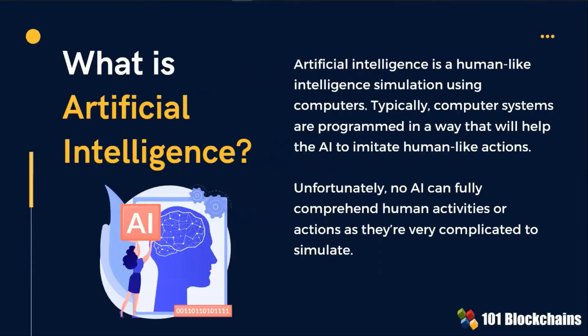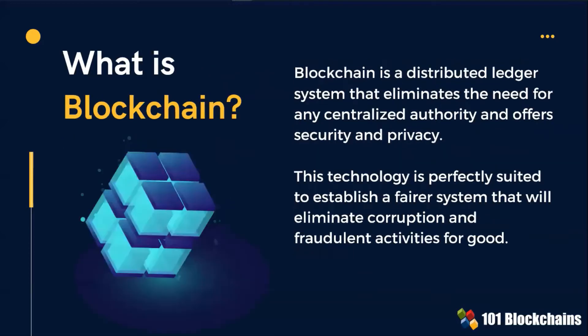With artificial intelligence, or AI, computer systems are programmed to imitate human-like actions. In its basic definition, blockchain is a distributed ledger system that eliminates the need for any centralized authority and offers security and privacy.